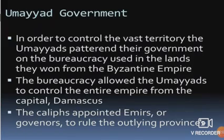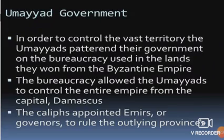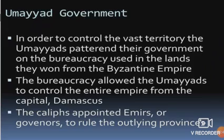In order to control the vast territory, the Umayyads patterned their government on the bureaucracy used in the lands they won from the Byzantine Empire. The bureaucracy allowed the Umayyads to control the entire empire from the capital Damascus. The caliphs appointed armies or governors to rule the outlying provinces. The Byzantine Empire, as I have already explained, is the Eastern Roman Empire near the Black Sea. If you have not watched my previous videos, please go through those videos where I have discussed about the locations of these empires.